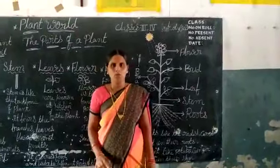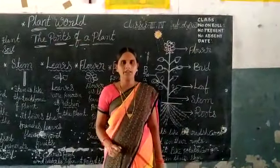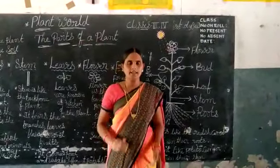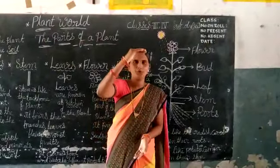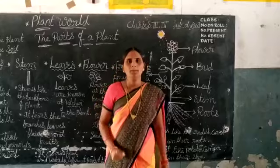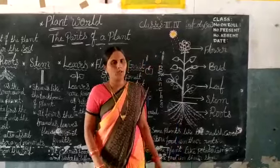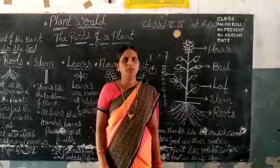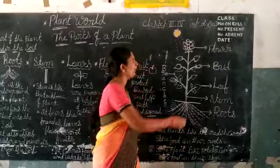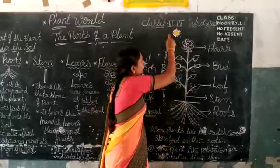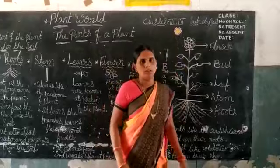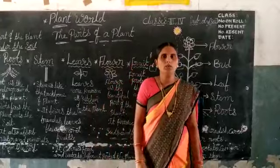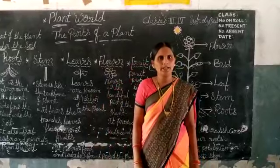Plants need water, soil and sunlight to grow. Plants make their own food with the help of sunlight. We can't live without plants.